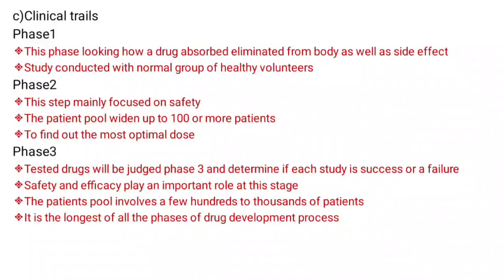Once FDA approval is obtained, we can start clinical trials. There are three phases. In Phase 1, the study examines how a drug is absorbed and eliminated from the body as well as its side effects, conducted with a group of healthy volunteers. In Phase 2, the focus is mainly on safety, with patient pools of up to 100 or more patients to find the most optimal dose. In Phase 3, the drug is tested to determine if the study is a success or failure; safety and efficacy play an important role, with patient pools involving a few hundred to thousands of patients. It is the longest of all phases of drug development.